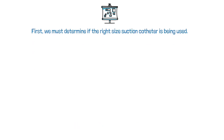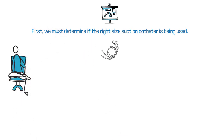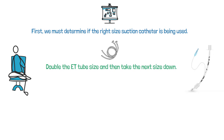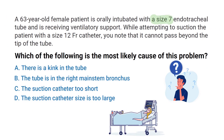Let's break it down. After reading the question and answer choices, we must first determine if the right size suction catheter is being used. A quick and simple way to do so is to double the ET tube size and then take the next size down. For example, the patient has a size 7 endotracheal tube — double that to get 14, then take the next smallest catheter size, which would be a size 12. This confirms that a size 12 catheter is the appropriate size for a size 7 endotracheal tube, so we can rule out answer choices C and D automatically.